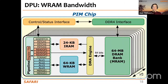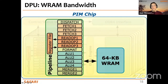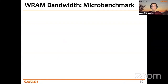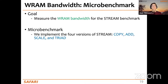Now let's see how fast we can access data from WRAM — either reading or writing — data that will be used in the pipeline for arithmetic operations. We define a new microbenchmark resembling the popular STREAM benchmark. STREAM has four versions: copy, add, scale, and triad, performing addition, multiplication, and combinations respectively.